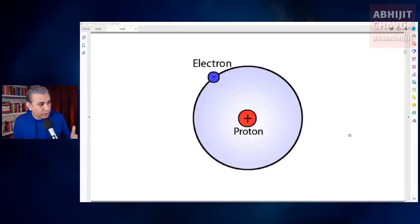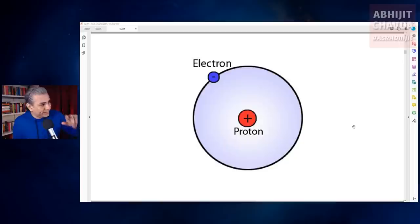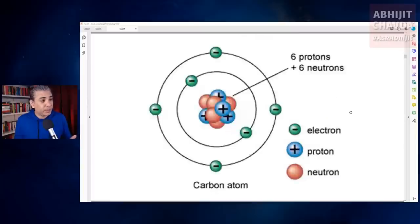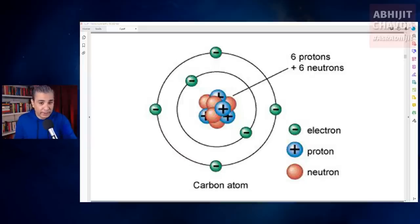Hydrogen is the simplest atom. Its nucleus consists of only one proton, and a single electron orbits this nucleus. The helium atom has a nucleus made up of two protons and two neutrons, and two electrons orbit the nucleus. The number of protons and neutrons in the nucleus determines the behavior and properties of an atom.